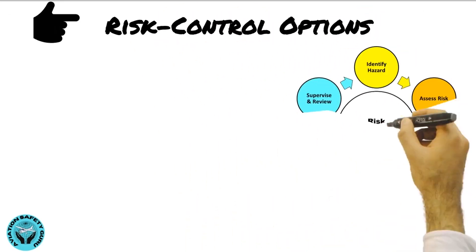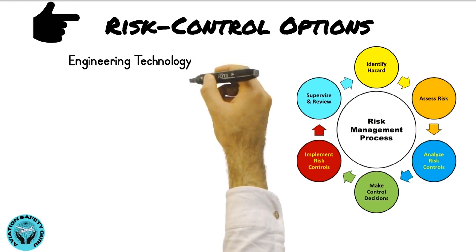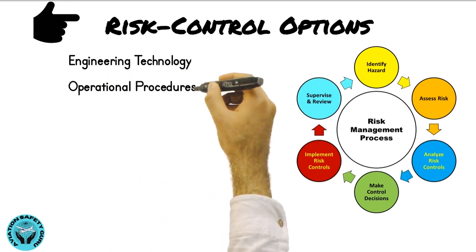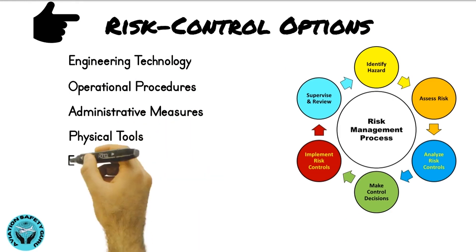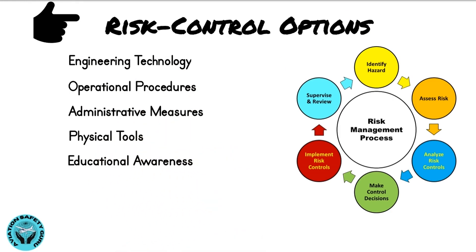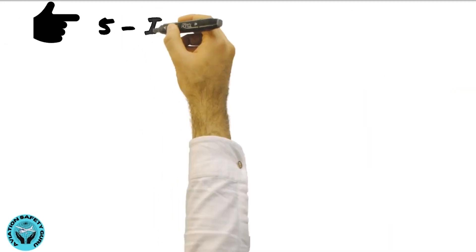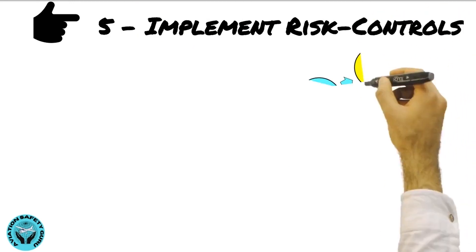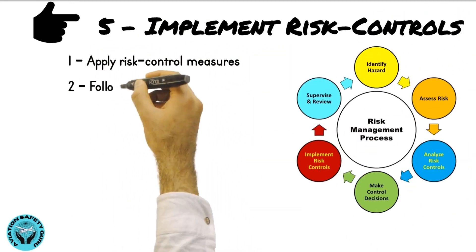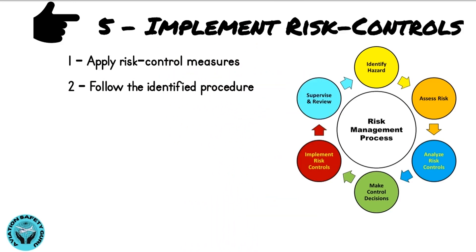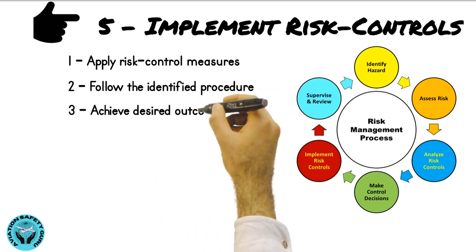The most common risk control options are: engineering technology, operational procedures, administrative measures, physical tools, educational awareness, and personal protective equipment. The next step in this process is to implement risk controls — apply risk control measures and follow the identified procedure to achieve the desired outcome.